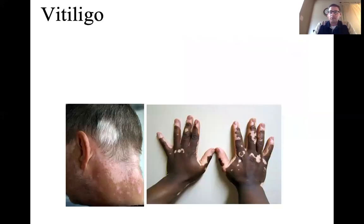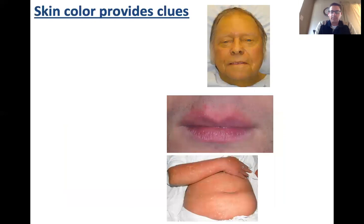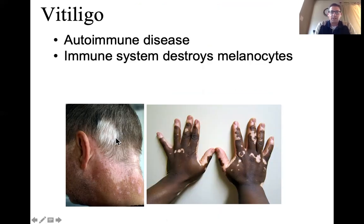The second disorder is vitiligo, which is an autoimmune disease, meaning the body's immune system attacks its own cells instead of foreign cells. In this case, the immune system destroys melanocytes at random locations in the body. You end up with patches of skin where there is no melanin. If it happens on the scalp, the hair produced there is white because there's no melanin in the hair. It can happen on the hands or anywhere in the body.